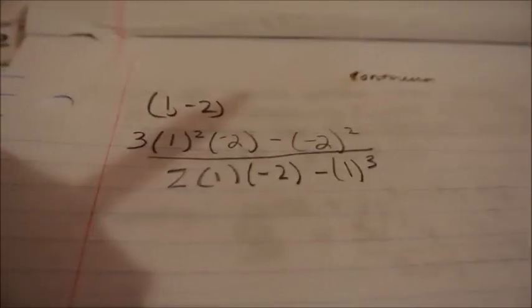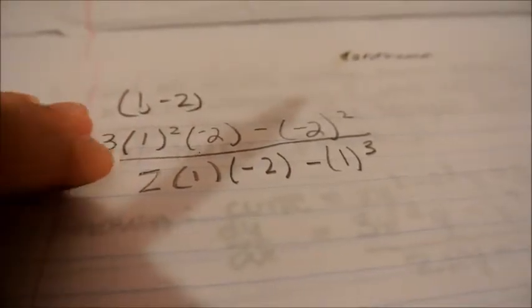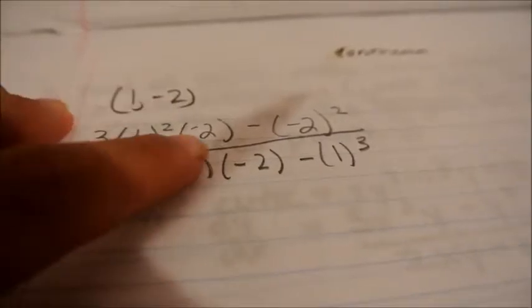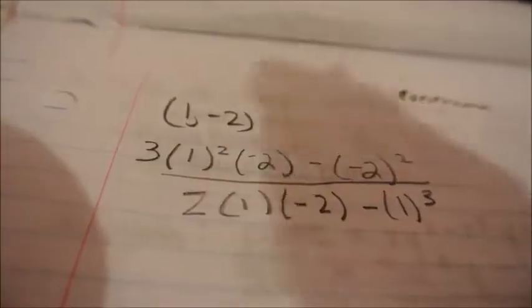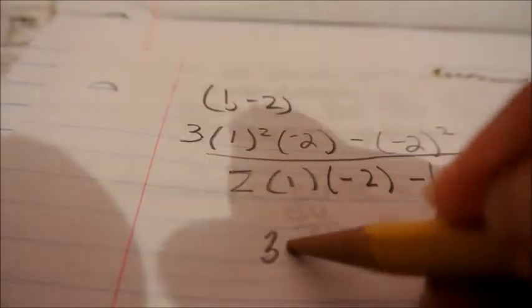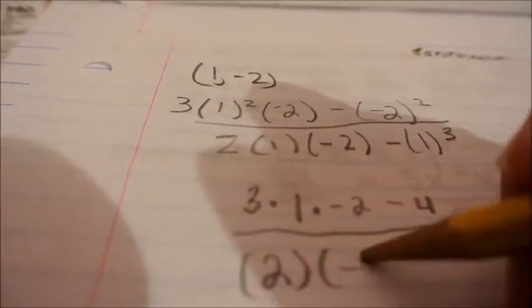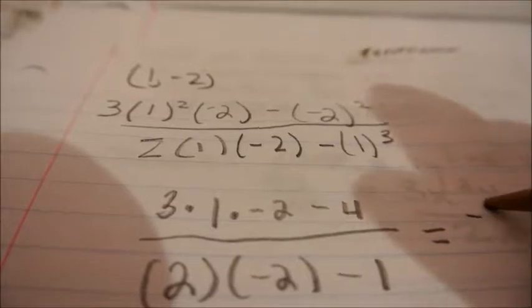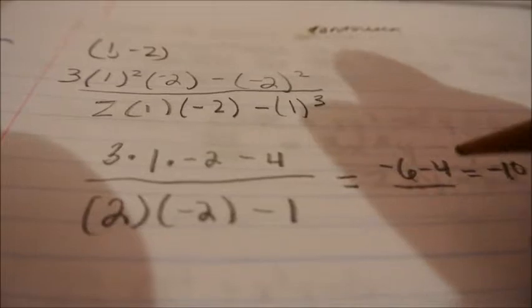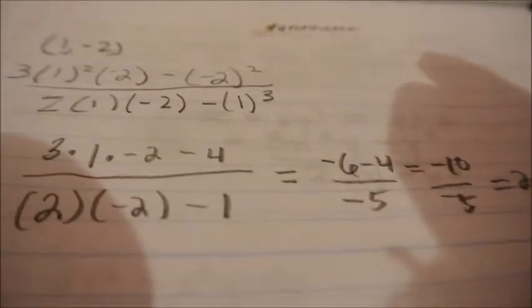I have taken the derivative that was given, and I already have substituted 1 for all the x's, and negative 2 for all the y's. So it reads: 3 times 1 to the second power, times negative 2, minus negative 2 raised to the second power, all divided by 2, times 1, times negative 2, minus 1 to the third. And when solved, this equals 3 times 1, times negative 2, minus 4, over 2, times negative 2, minus 1. So the slope is 2.